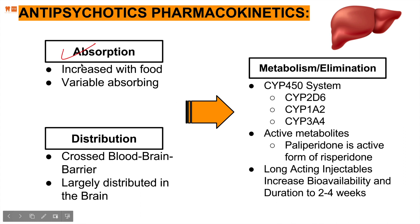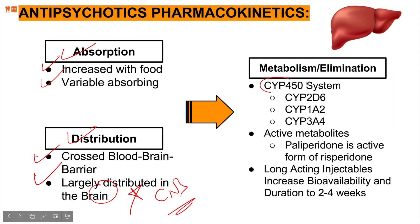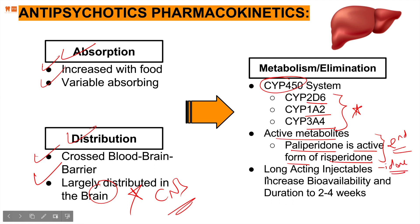Regarding pharmacokinetics: antipsychotics are absorbed variably in the stomach and intestine, with absorption increased by food. Distribution involves crossing the blood-brain barrier, with the drug largely distributed in the brain — critical for CNS pharmacology. Metabolism and elimination occur through the CYP450 family, specifically the 2D6, 1A2, and 3A4 enzymes. Active metabolites include paliperidone, an active metabolite of risperidone. Long-acting injectables are available, increasing bioavailability for up to 2 to 4 weeks.